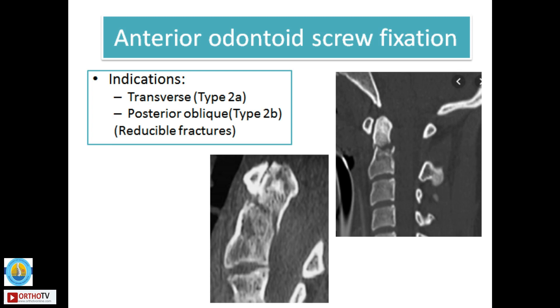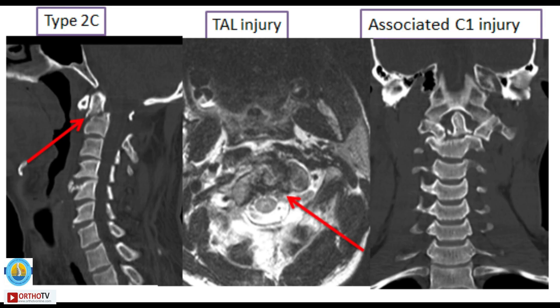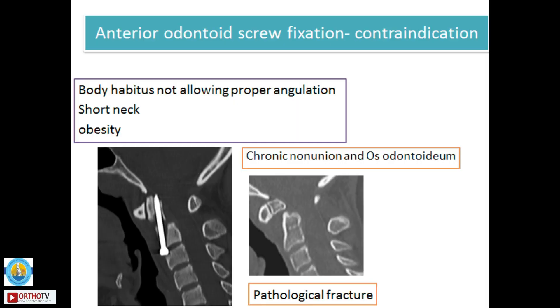There are other contraindications which are very important to remember. One is the presence of a type 2C fracture pattern, associated injury of the transverse atlantoaxial ligament, associated C1 ring injury, and most importantly the technical skill of the surgeon. It is also important to consider body habitus — if somebody has a short neck, the prominence of the chest is a contraindication. Chronic non-unions are also a definite contraindication for this procedure.